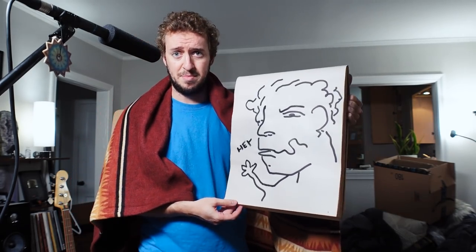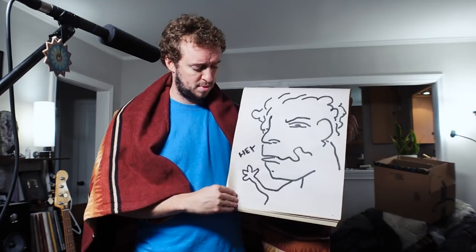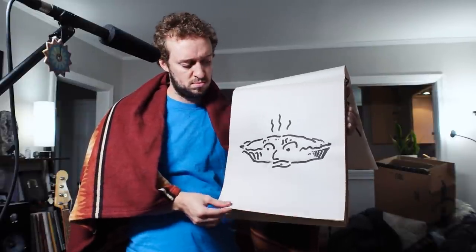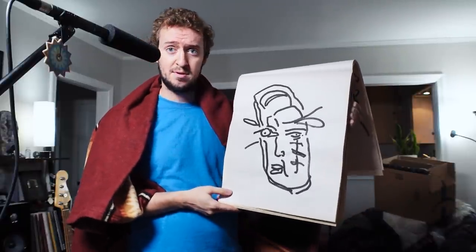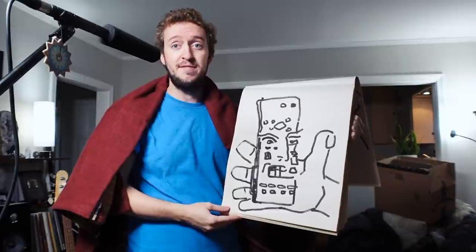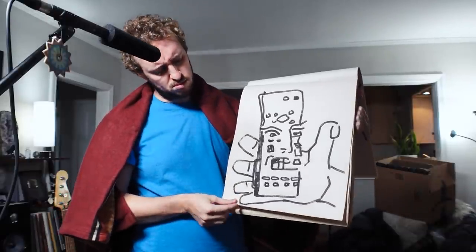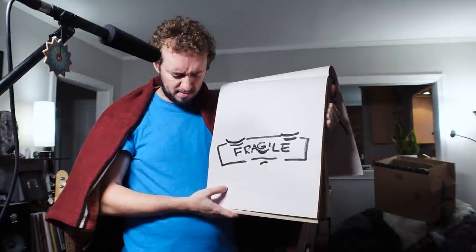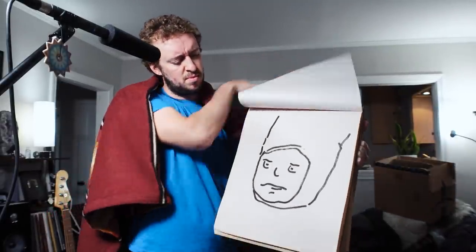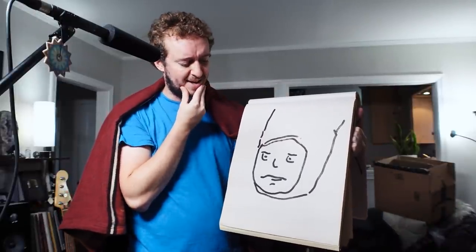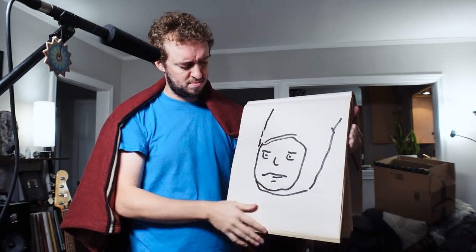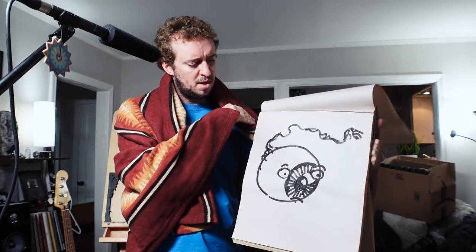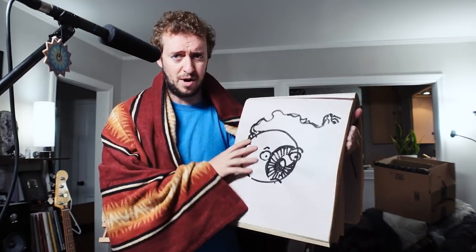Alright, so here I am just normally, this is me just waving hey, like so. Here I am as a hot pie. Here I am as a shoe. Here I am as a TV remote. Here I am — this is me as a FRAGILE sticker. This is me as a FINGERNAIL. This is me as an angry triangle. Me as an eyeball — this is actually the only one I drew two versions of.